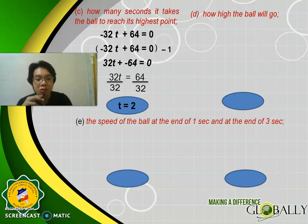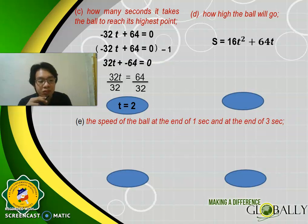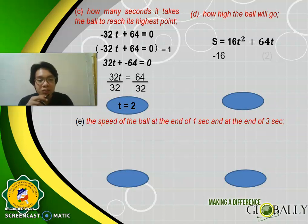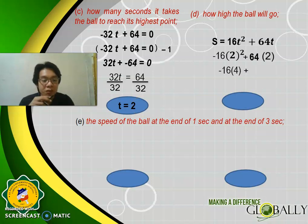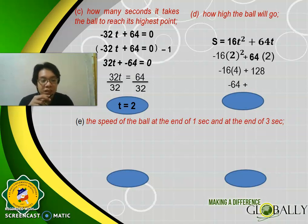For part D — how high will the ball go? Write the given equation of motion: S = −16T² + 64T. This time, instead of taking the derivative, substitute the answer from part C, which is T = 2. So: −16(2²) + 64(2) = −16(4) + 128 = −64 + 128 = 64 feet. Therefore, the ball reaches a highest point of 64 feet above the starting point.